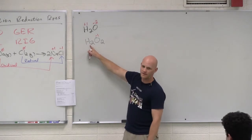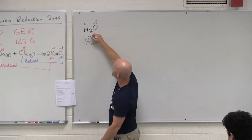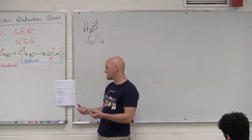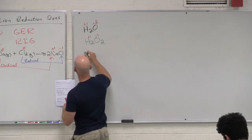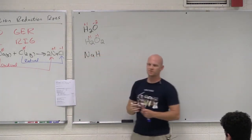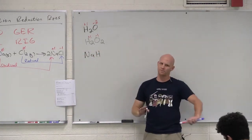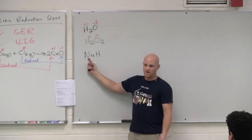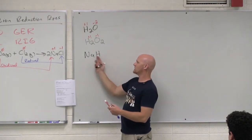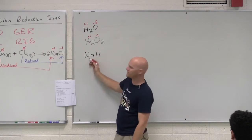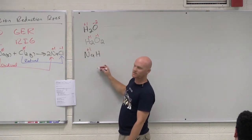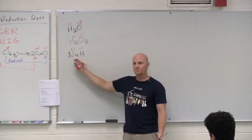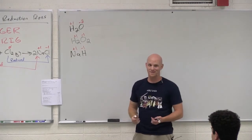In hydrogen peroxide, hydrogen is also plus one. Hydrogen is usually plus one — the only exception is when hydrogen is bonded only to a metal, which we call a hydride. For example, in sodium hydride (an ionic compound, metal plus non-metal), sodium is a monatomic ion at plus one, so hydrogen would have to be negative one to balance. It's very rare, but when hydrogen is only with a metal it's minus one instead of plus one.